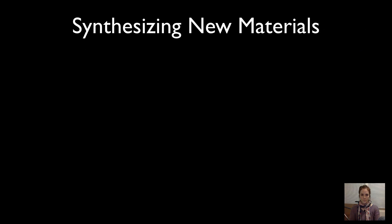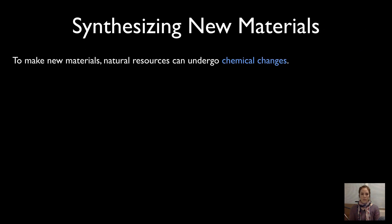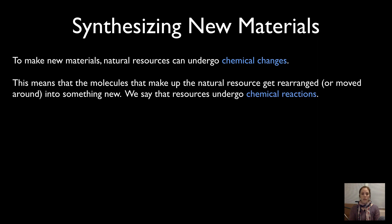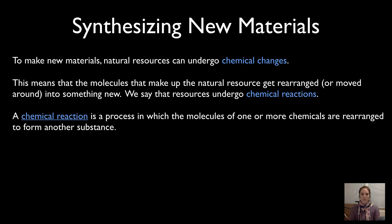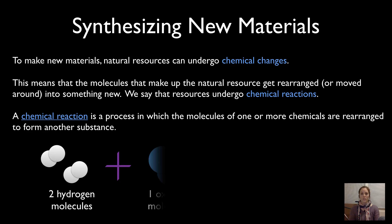To make new materials from natural resources, they undergo something called a chemical change. This means the molecules that make up the natural resource get rearranged or put together in a new way to make something new. We say the resource has undergone chemical reactions — a process in which the molecules of one or more chemicals are rearranged to form a new substance.